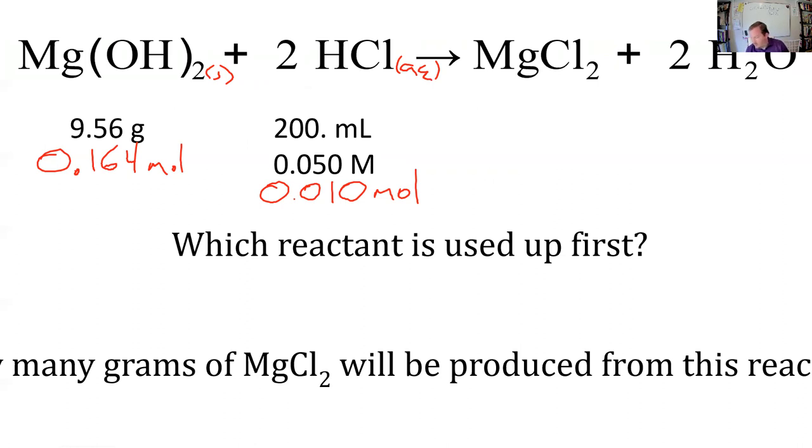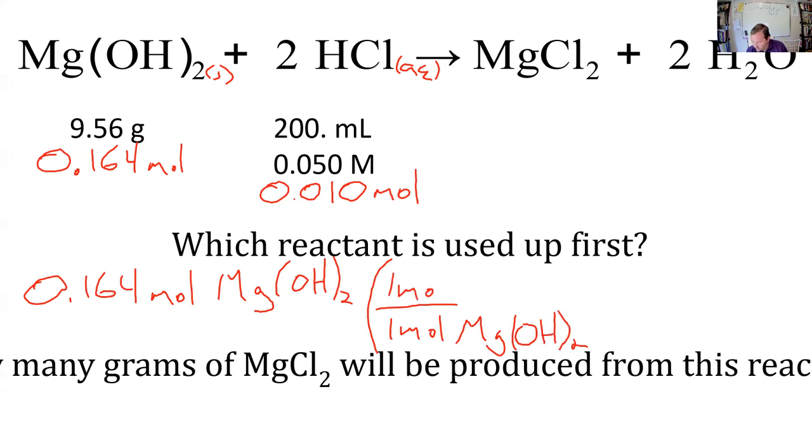If we want to know how many grams of MgCl2 is being made, then showing our work to figure out what the limiting reactant is, we might as well do the method where we just predict how much product we can make, and then whichever number is lower is the real number. So we set 0.164 moles Mg(OH)2 and 1 mole Mg(OH)2 makes 1 mole magnesium chloride.